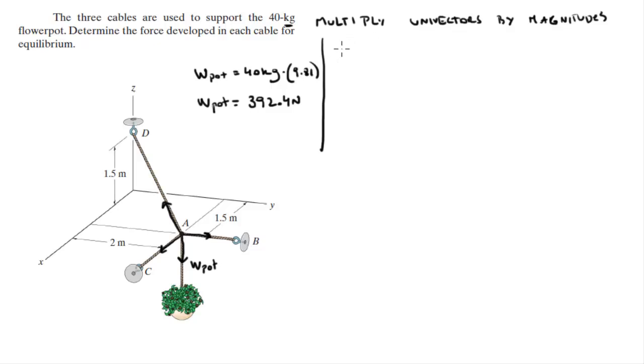So then what you need to do is multiply all the unit vectors by the magnitudes and that's going to make the problem much easier. You got the force AB times the unit vector AB, the force AC times the unit vector AC, the force AD times the unit vector AD, and the weight of the pot times the unit vector for the pot which is going straight down. And it's going to give you the Cartesian vector form of each of these vectors.